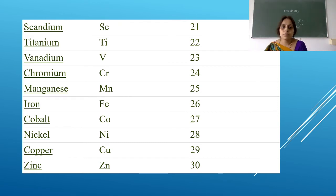Scandium, SC. Atomic number 21. Titanium, Ti. 22. Vanadium, capital V. 23. Chromium, CR. 24. Manganese, MN. 25. Iron, Fe. 26. Cobalt, Co. 27. Nickel, Ni, 28. Copper, it is Cu, 29. Zinc, it is Zn, 30.